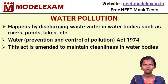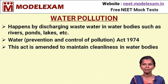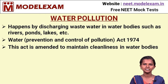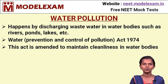Water Pollution. The next type of pollution we are going to discuss is water pollution. This happens because of discharging waste particles or waste water into water bodies such as rivers, ponds and lakes, which are used by many organisms. The Water Prevention and Control of Pollution Act was established in 1974 to maintain cleanliness in water bodies.